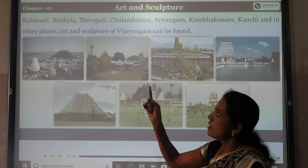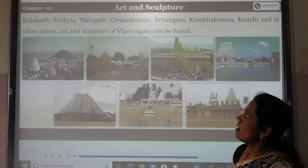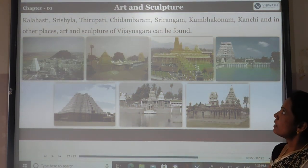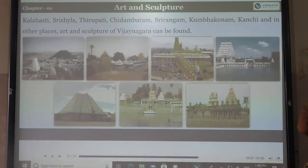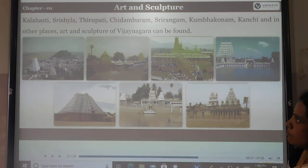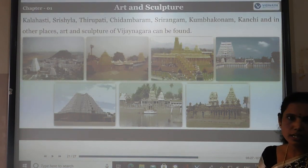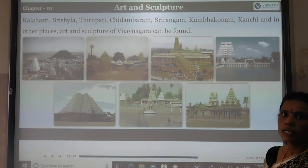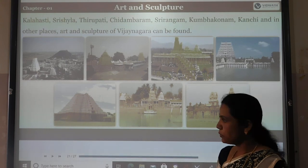Art and sculpture of the Vijayanagara Empire can also be found in other places such as Kalahasti, Tirupati, Chidambaram, Srirangam, Kumbhakonam, Kanchipuram, and other locations.